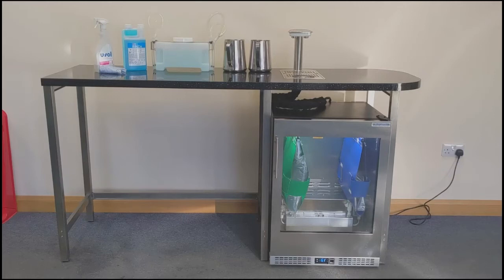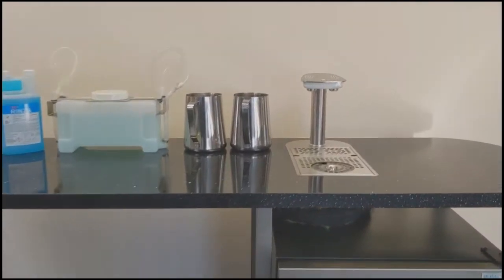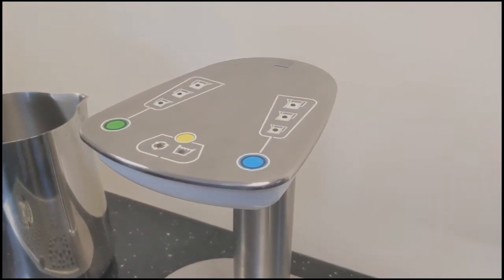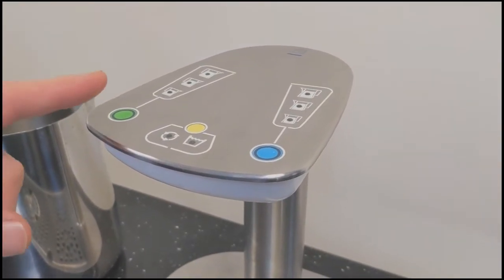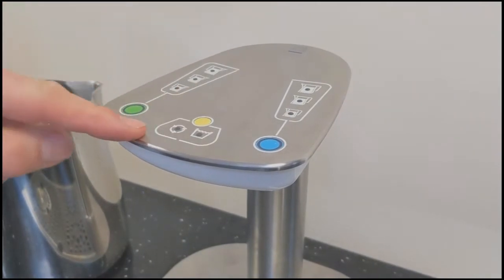I'm going to demonstrate cleaning the bib version of the milk shop machine. We have three buttons: the green on the left and the blue on the right dispense buttons, and the center cleaning button.